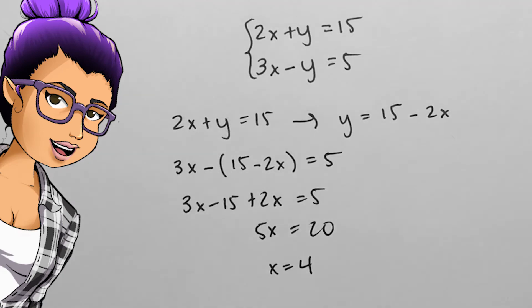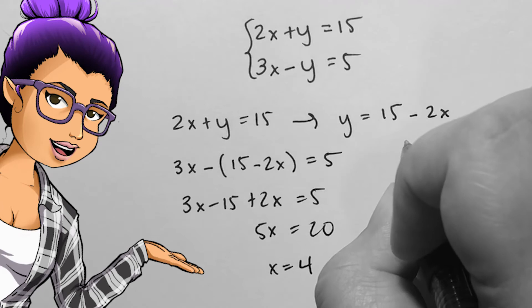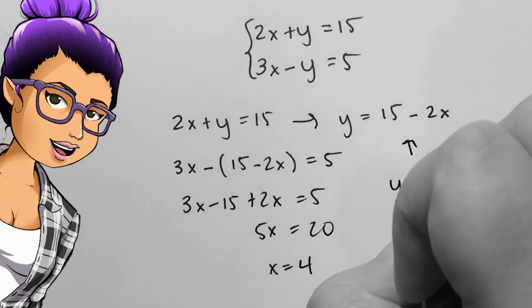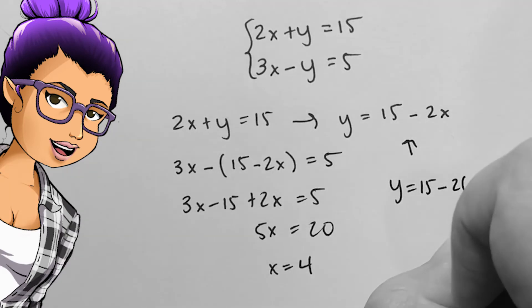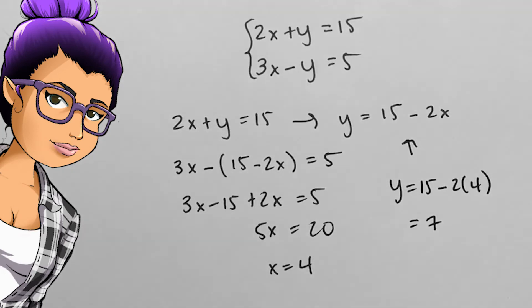Then solve for x. You now know that x is 4. Replace the x in either of the two original lines to solve for y. 2 times 4 plus y equals 15, so y equals 7.